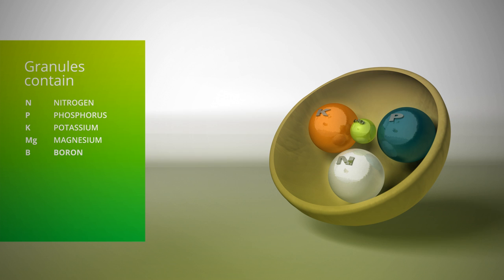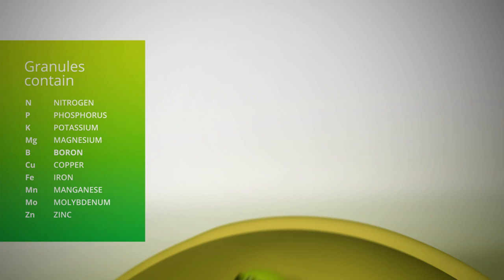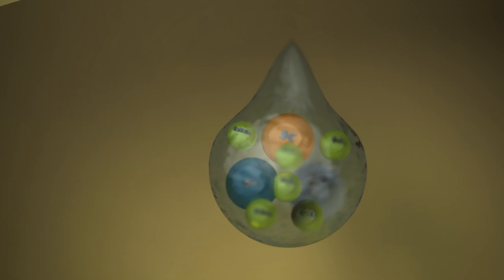A granule contains nitrogen, phosphorus, potassium and all essential trace elements. When water penetrates the granule coating, a process starts that dissolves the nutrients.